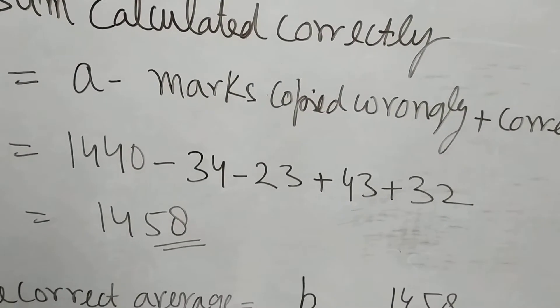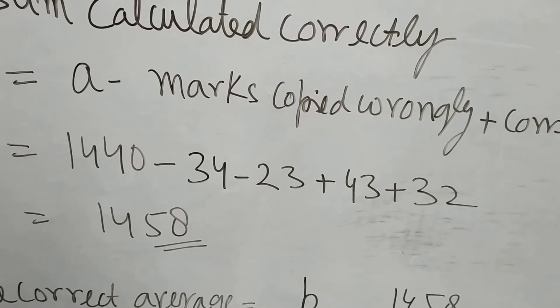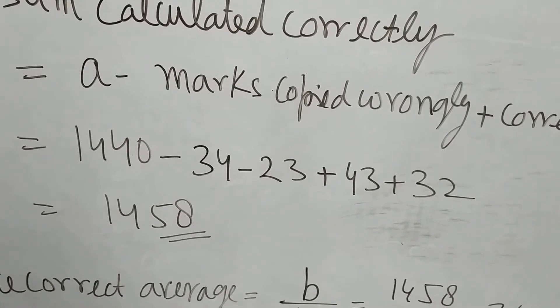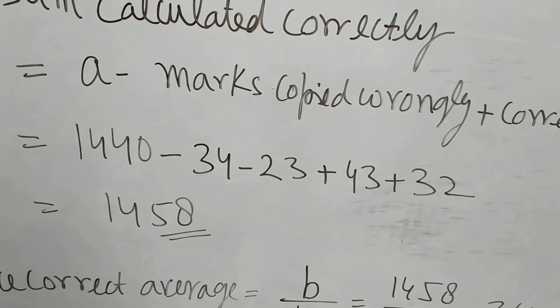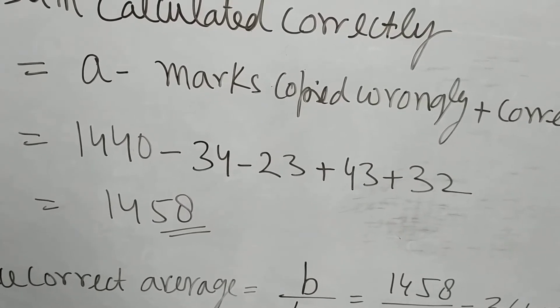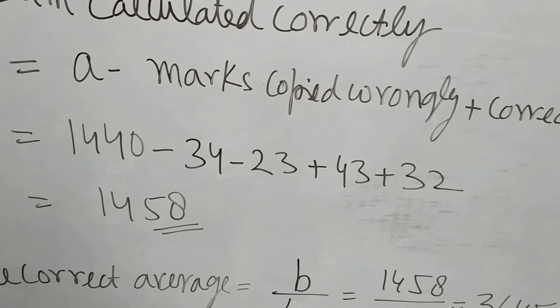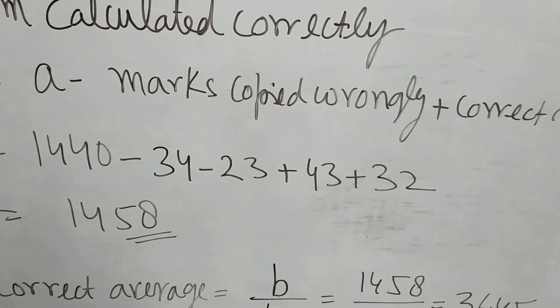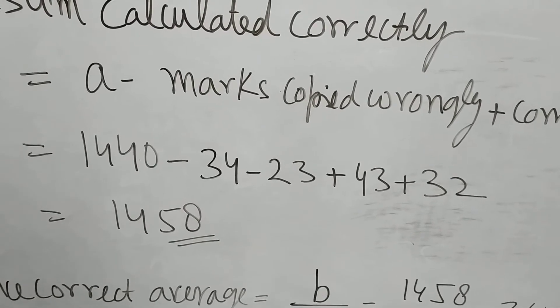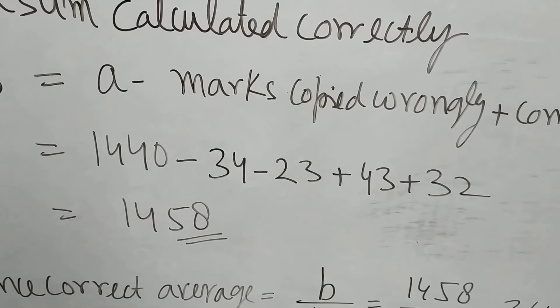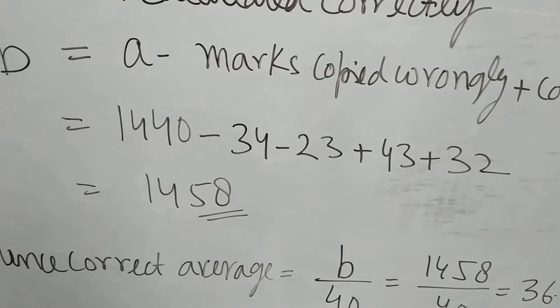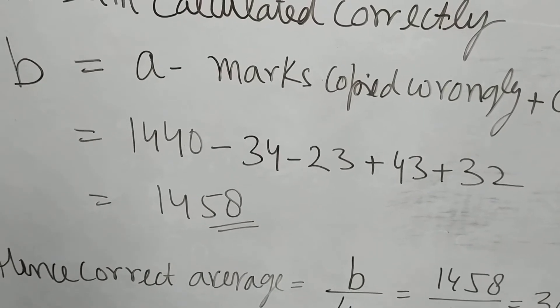We have wrongly calculated sum minus wrongly calculated numbers, then add the correct numbers. We get 1458. Now this is the correct sum.